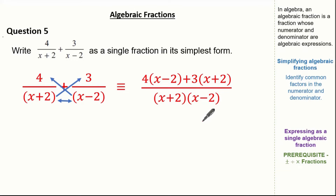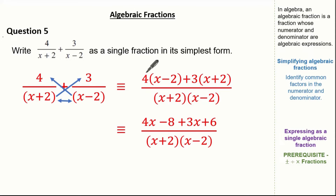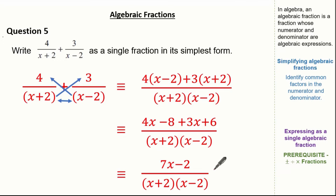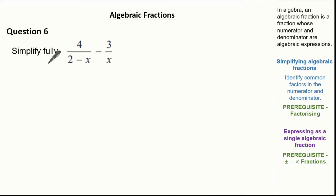Now let's simplify the numerator. Expanding: 4 times x is 4x, 4 times minus 2 is minus 8, 3 times x is 3x, and 3 times 2 is 6. Our denominator remains (x plus 2)(x minus 2). Simplifying our numerator gives me 7x minus 2 over (x plus 2)(x minus 2). You can expand the denominator if you wish, but there's really no need as you'll receive full marks.